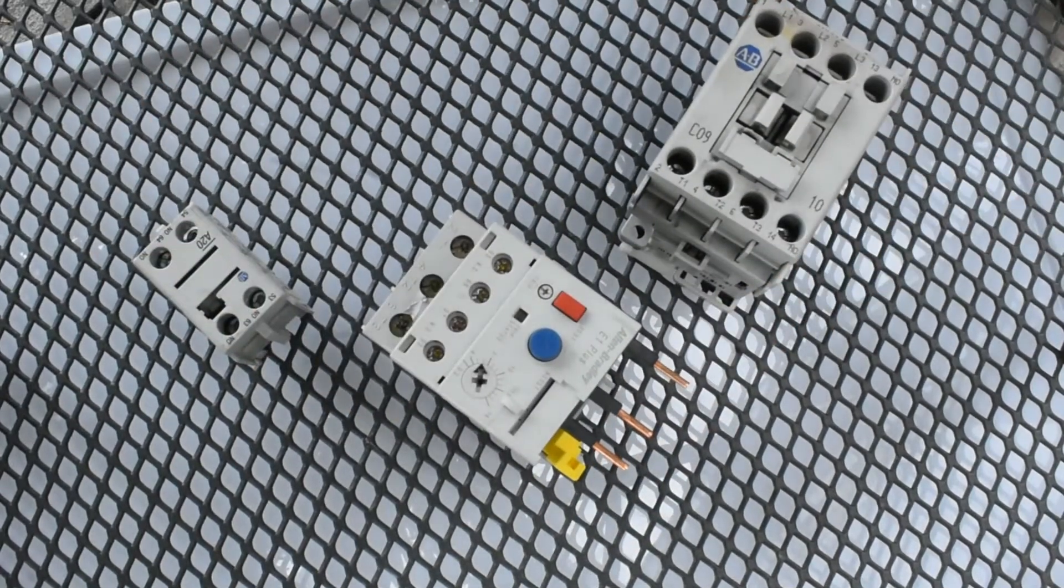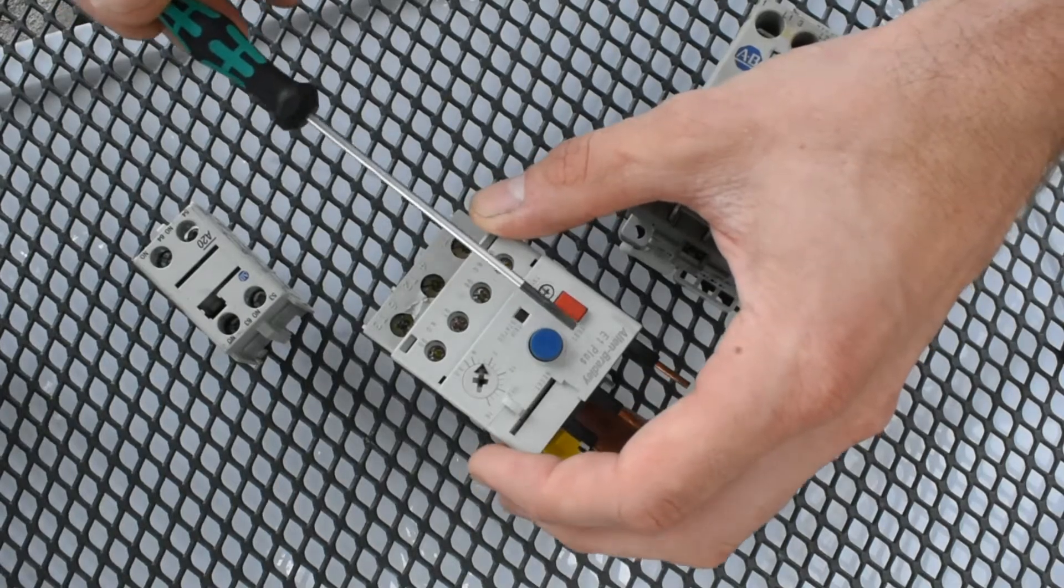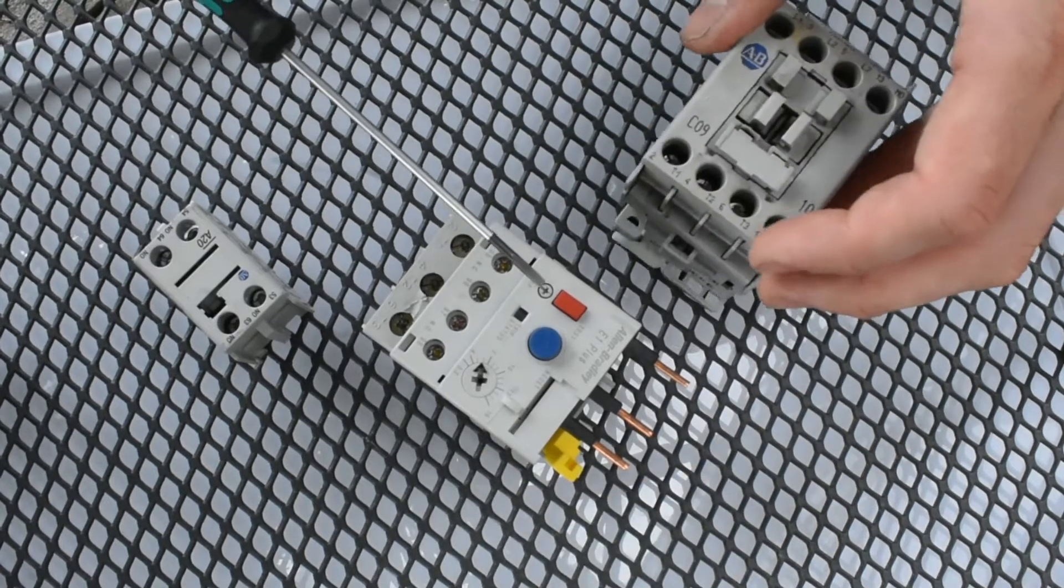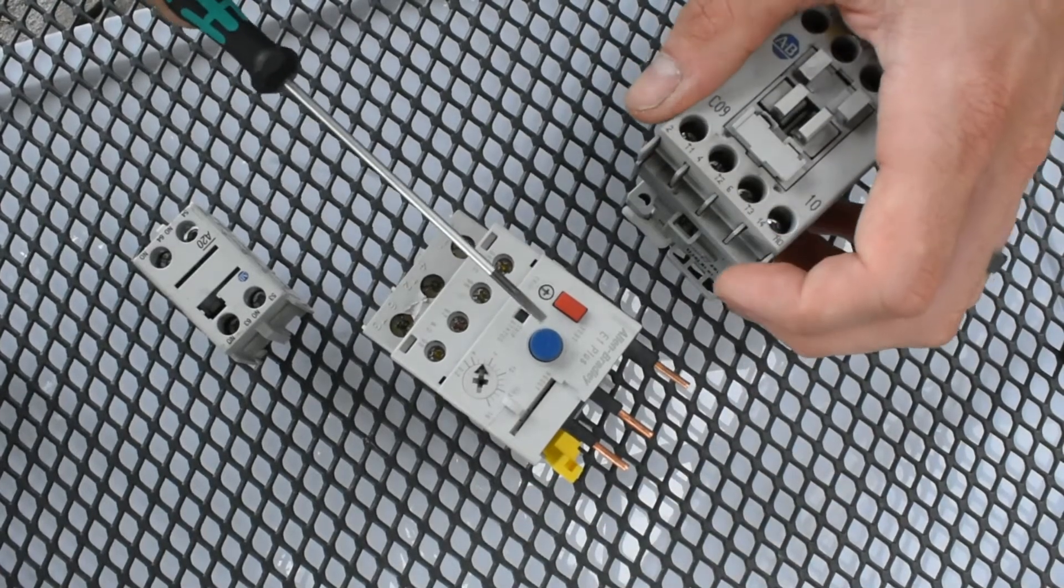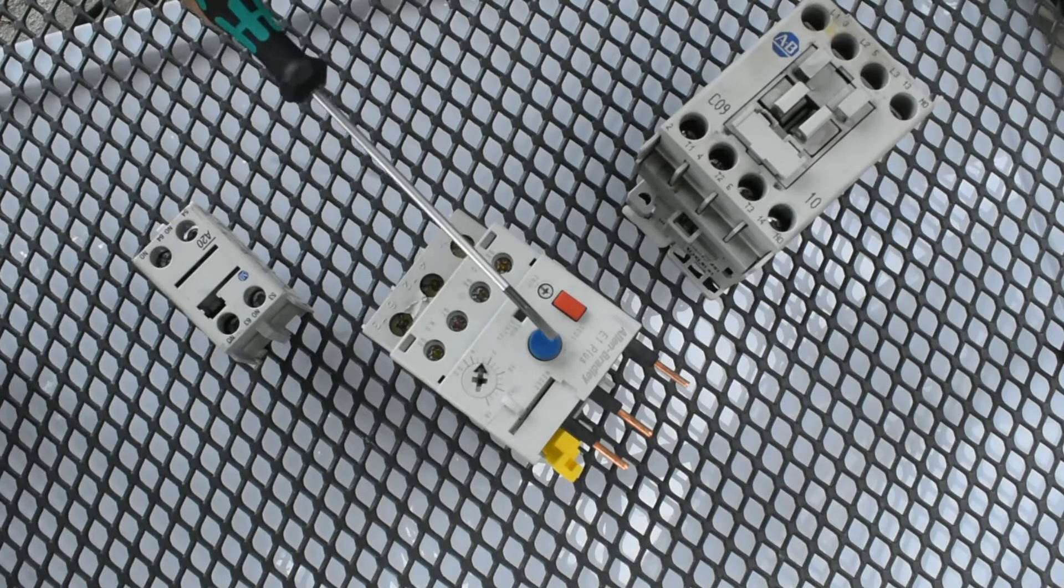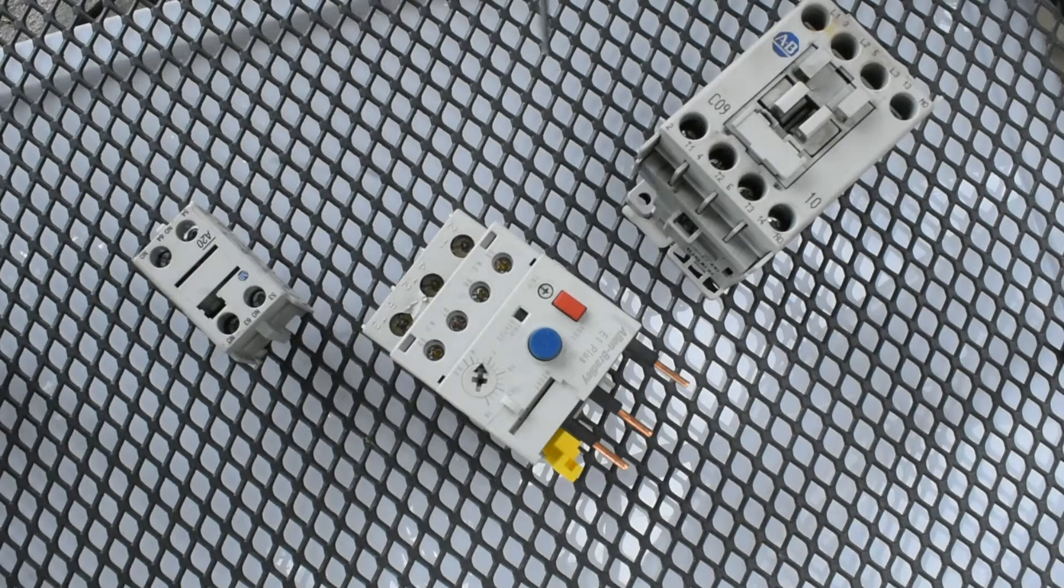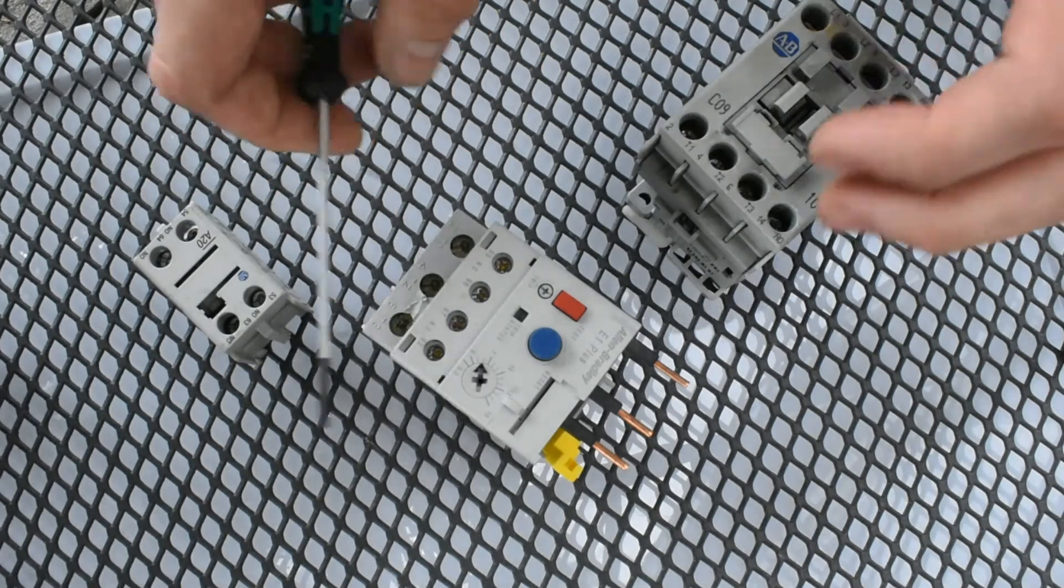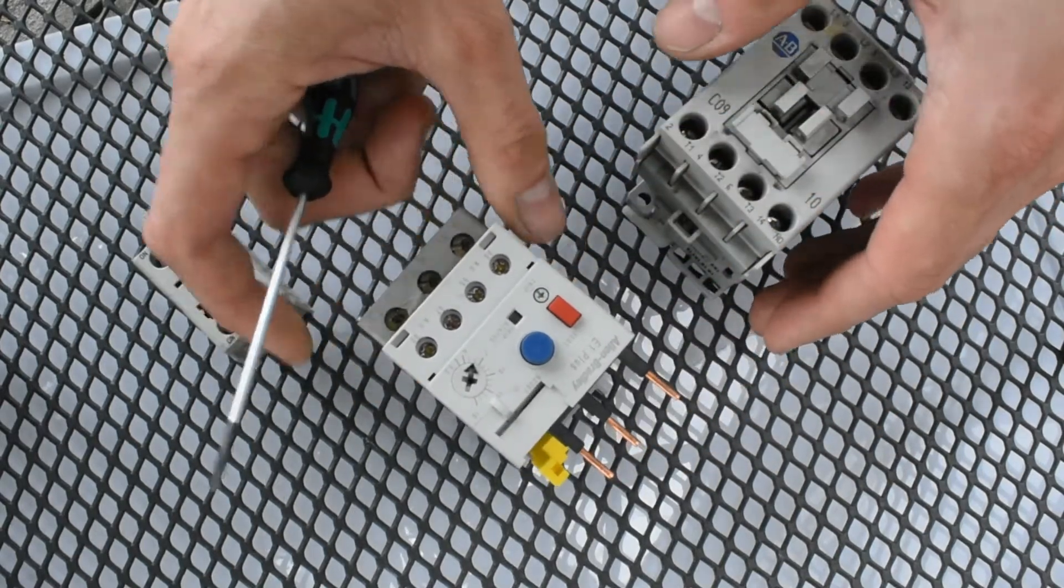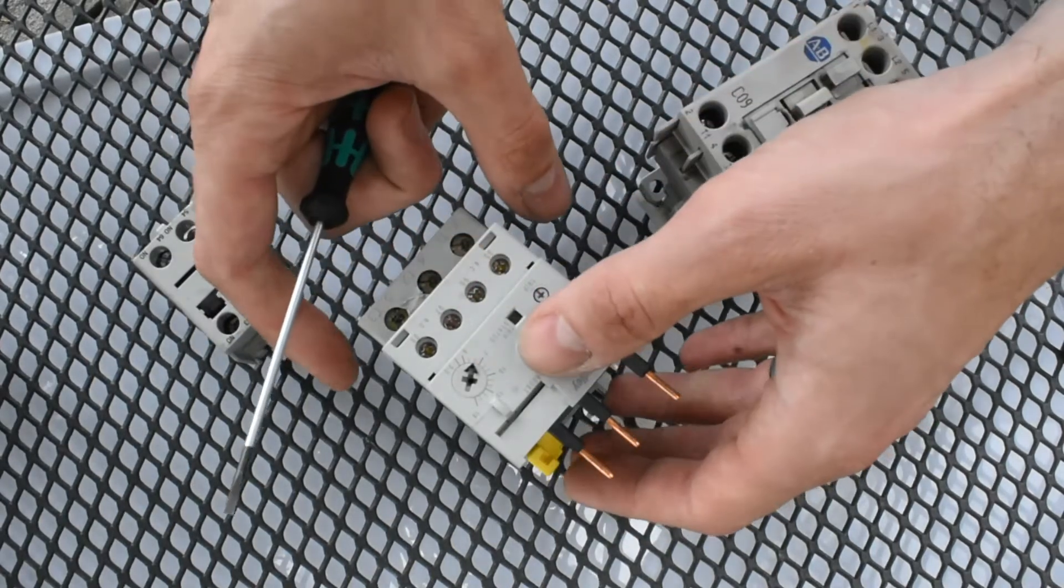Now, this other device, this overload relay, is a really important part of the motor starting system. It has a test and a reset, so that you can periodically test to make sure that the metallic contacts inside are effectively opening and closing. But basically, its job is to protect the motor and turn itself off in case of overcurrent. That overcurrent might come from too much force and load on the motor, and there's a couple of different reasons that we want to protect that, but certainly safety to the system and protection of the circuitry and the load is the most important.